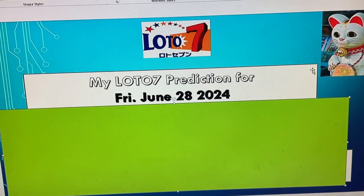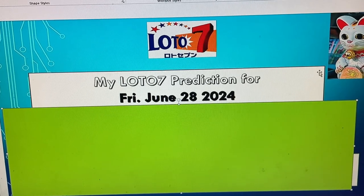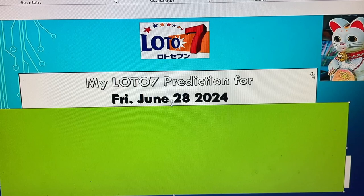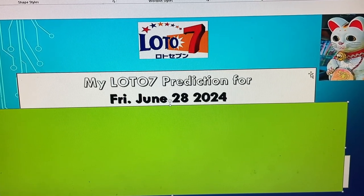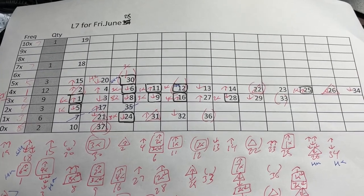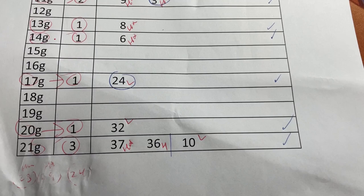Hi my lottery friends, it's James. Get ready for my Lotto 7 prediction for Friday, June 28th, 2024. First I'll show you my worksheet, then I'll read the numbers, and then I'll show you the numbers. You're looking at my Lotto 7 worksheet for Friday, June 28th. I've been working very hard trying to find the best numbers for us.